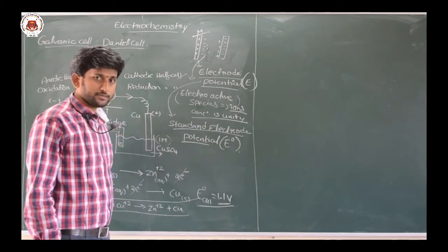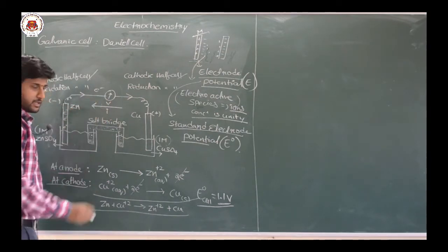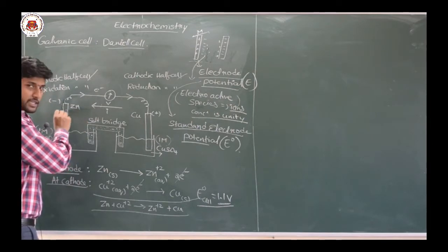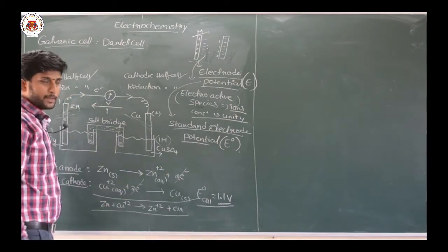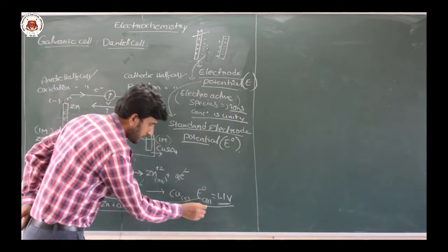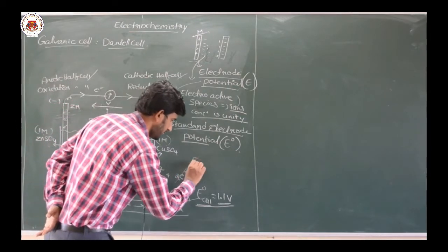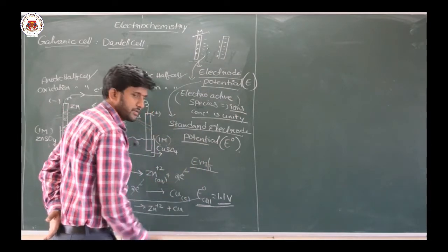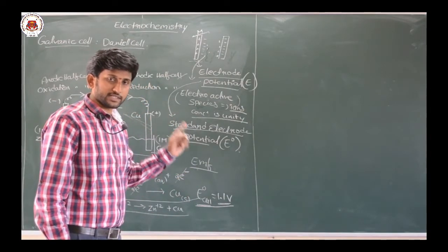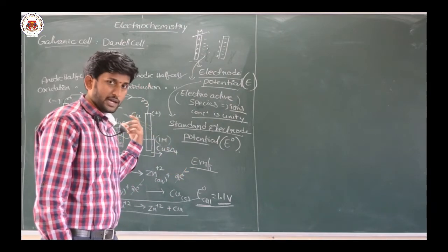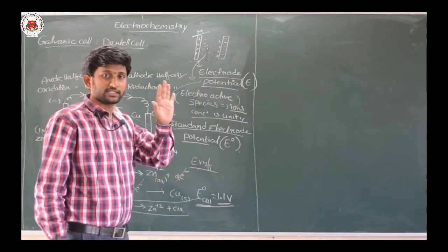The potential difference between the two half cells — that is, between the zinc electrode and copper electrode, the zinc redox couple and copper redox couple — in a Daniel cell is called the EMF of the cell, represented as E_cell. EMF of the cell is the potential difference between the anodic half cell and cathodic half cell, or the potential difference between two half cells in a galvanic cell.